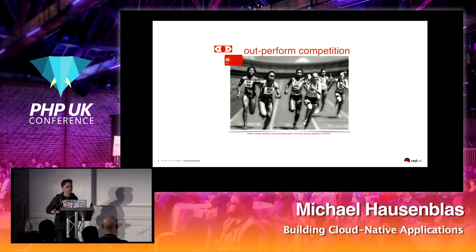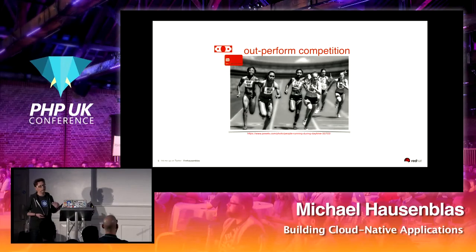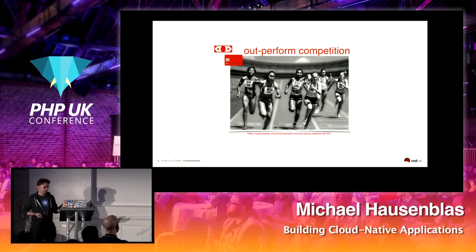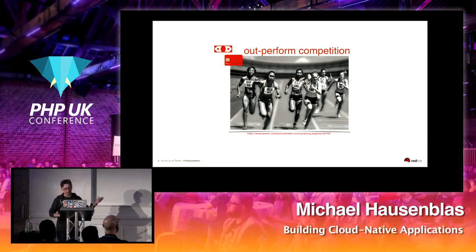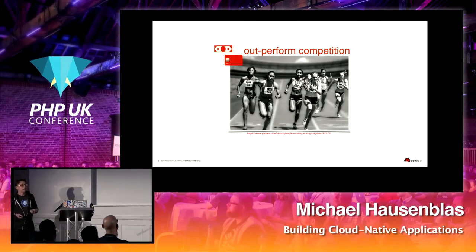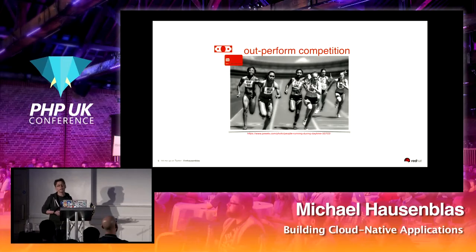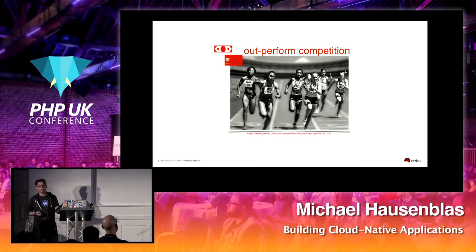Why are we bothering with cloud native and containers and all that? At the end of the day, we want to outperform the competition — we want to ship features faster. We live in a 24/7 world where we get nervous if we can't buy something immediately. Business demands that we ship fast and faster. If we can ship faster than the competition, at least in theory, we're better off. That's not the most important thing to me, but I understand that business needs drive a lot of that.